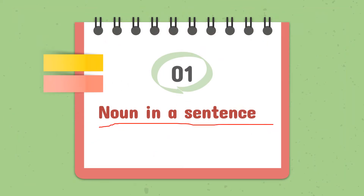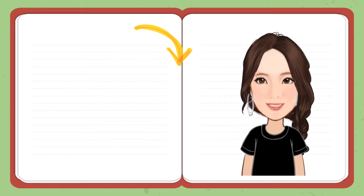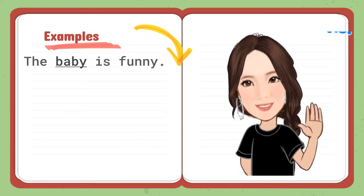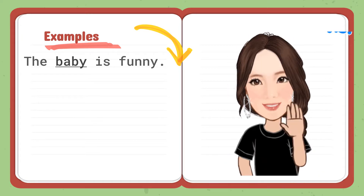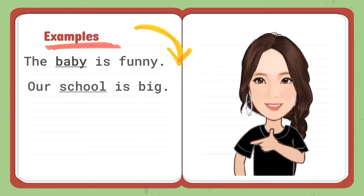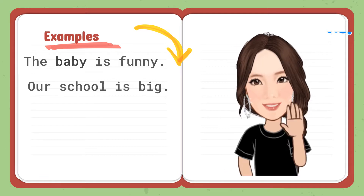Noun in a sentence. Let us identify the noun in a sentence. I have here an example. The baby is funny. The underlined word there is baby. Baby is an example of a noun — baby refers to a person. Next, our school is big. The underlined word here is school. School refers to a noun. School is a place.